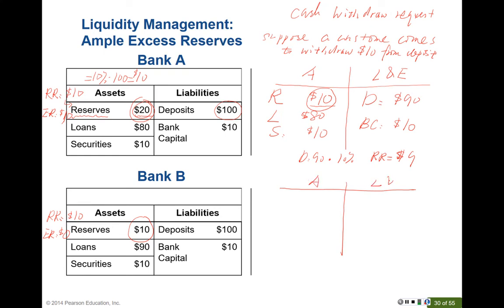Now let's look at Bank B. After one customer withdraws $10, the deposit drops to $90 and bank capital remains at $10. Bank B also uses its reserve to meet the cash withdrawal, so the reserve declines by $10 to zero. The loan balance becomes $90 and securities remain at $10.